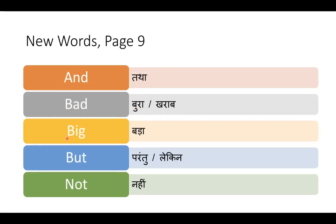Third word: big — b-i-g, big. Big ka matlab bada. Hamne dekha ek badi chiz hoti hai, ek choti chiz hoti hai — pencil choti hoti hai, lekin chhaat ya maidan bada — big playground, big school. Agla shabd but — b-u-t, but. But ka arth hota hai parantu ya lekin. Example: I eat cold food, but I cannot eat very hot food.